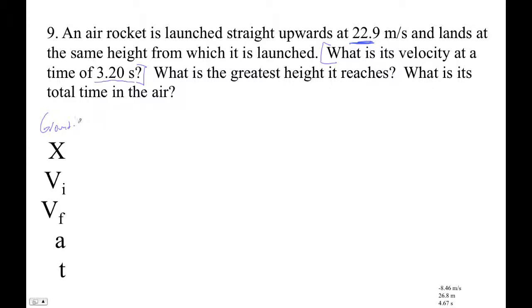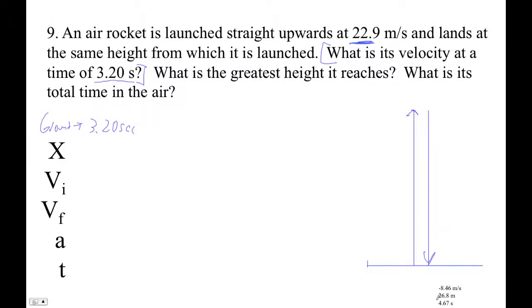We'll solve from the ground to 3.2 seconds. This thing is going to go up and down. Looking at the answer, it's four point six seven seconds total - up and down. So at 3.2 seconds it will have reached the peak and it's on its way down, so we should get a negative final velocity. Let's work it out: time is 3.2 seconds, acceleration is -9.8, initial velocity is 22.9 positive since it's going up.